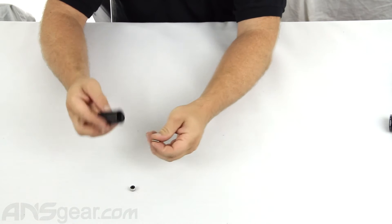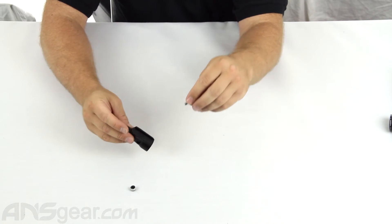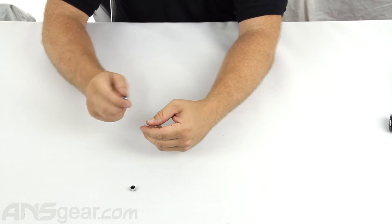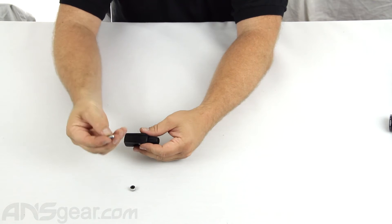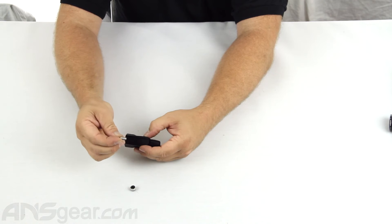Now the set screw you'd use if you were replacing this on an Azodan gun that you already had. This is the screw that's going to come in and hold this in place. This might not work in all guns though. If you're going to put this on a Matrix or something else, obviously you're not going to use this screw.